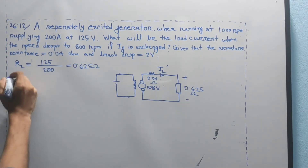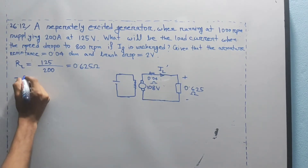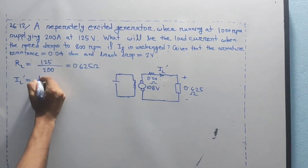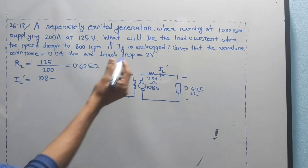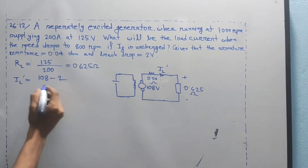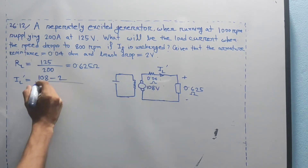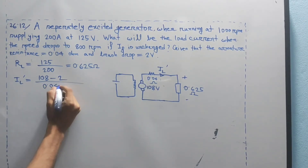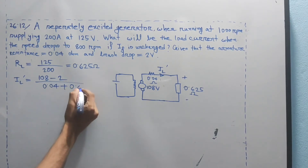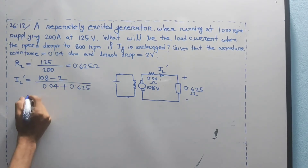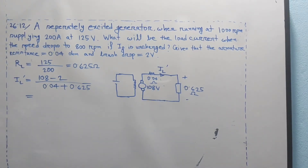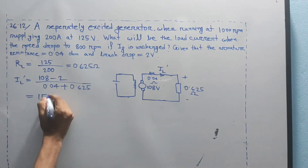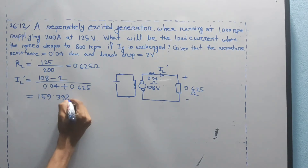Now we find the new load current IL prime. IL prime equals the new induced EMF minus brush drop, divided by total resistance: (108 − 2) divided by (0.04 plus 0.625). IL prime equals 106 divided by 0.665, which gives approximately 159.4 A.